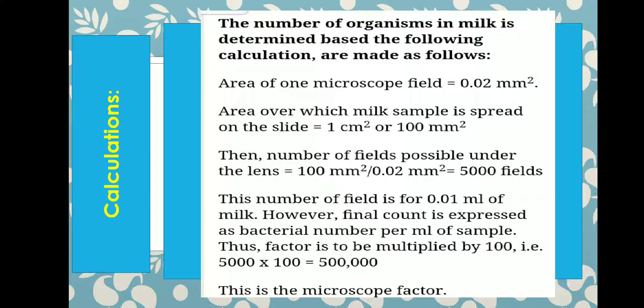Since the area of one microscopic field is 0.02 mm², and the total marked area is 100 mm², we calculate how many fields are present in 100 mm². This gives 5000 fields — this is the microscopic factor.